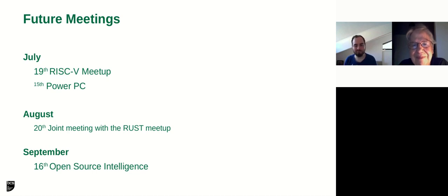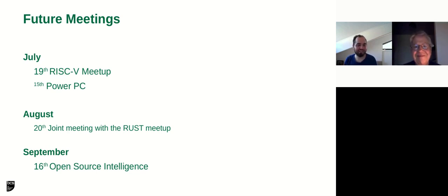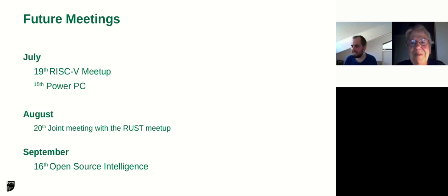Just to mention quickly: what is OSFG? The Open Source Specialist Group organizes exciting talks on a monthly basis. For July, we have a live meetup and a PowerPC evening. In August, we have a joint meeting with the RASC meetup from London. And in September, we talk about Open Source Intelligence — it's not CSI, it's more OSINT, but it's still kind of fun.